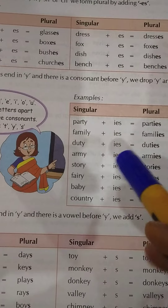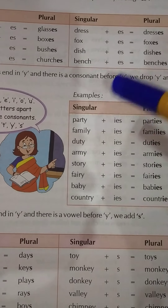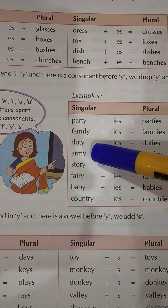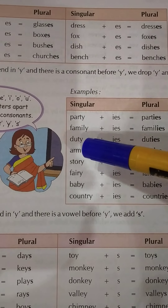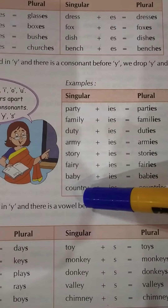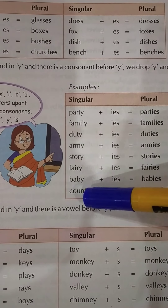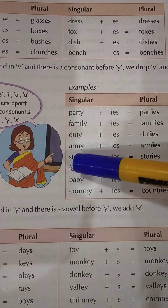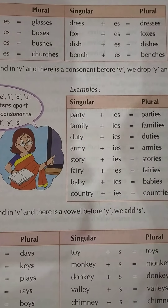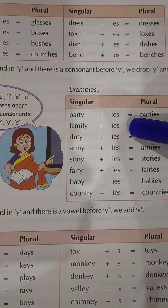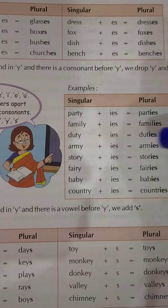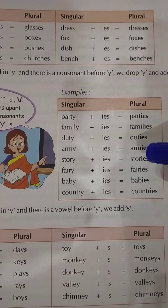Here are examples of this rule: party, family, duty, army, story, ferry, baby, country. In all of these, the letter before Y is a consonant, so we add IES to make them plural — parties, families, duties, armies, stories, ferries, babies, countries.